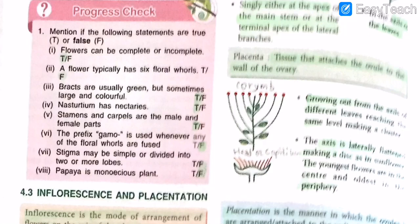Actually, 'gamo' meaning fused is true — polypetalous means they're free while gamopetalous means they're fused. Stigma may be simple or divided into two or more lobes — true. Papaya is a monoecious plant — that is false; papaya is a dioecious plant where only one of the two reproductive parts, either staminate or pistillate, is present on a given plant.